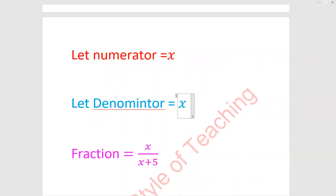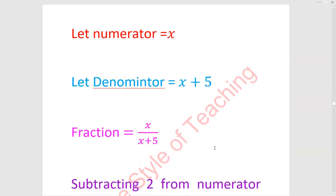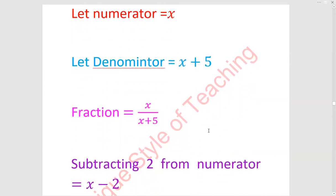x plus 5 will be the denominator. The fraction will be x upon x plus 5.